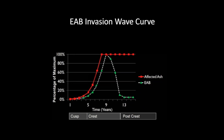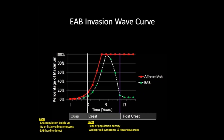We divide the curve into three phases. The first is the cusp phase, during which the EAB population builds up with no or very little visible symptoms — emerald ash borer is very hard to detect at this point. However, four or five years into the infestation, signs of emerald ash borer become evident every year. Then we reach a post-crest phase, at which point all untreated ash trees are likely dead, and the emerald ash borer has departed that community for the next community full of ash to attack.